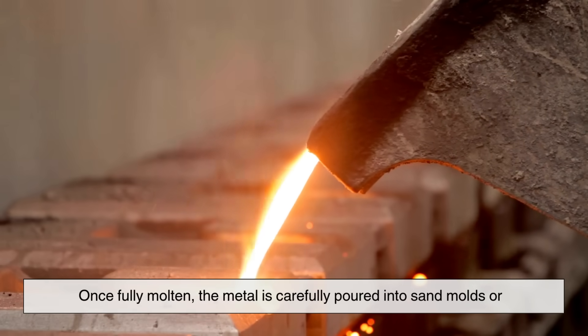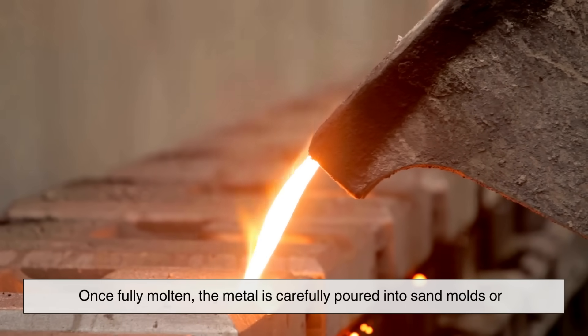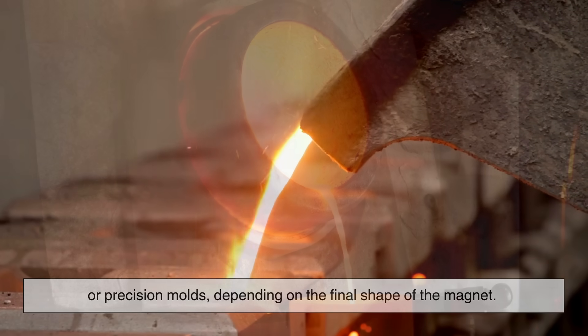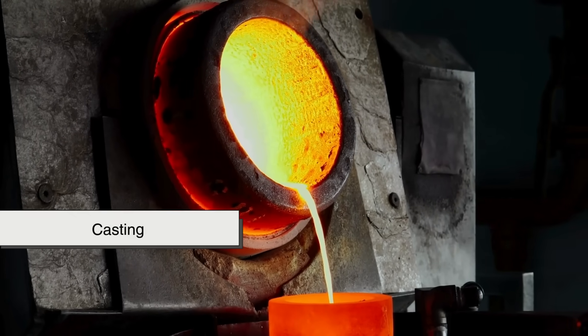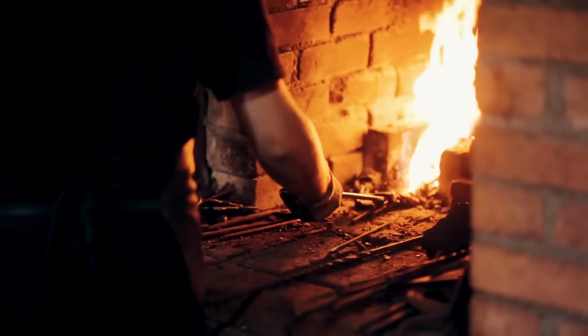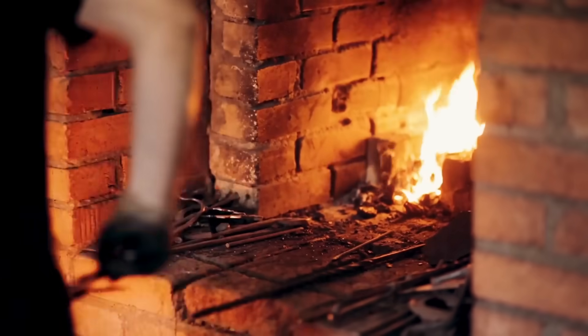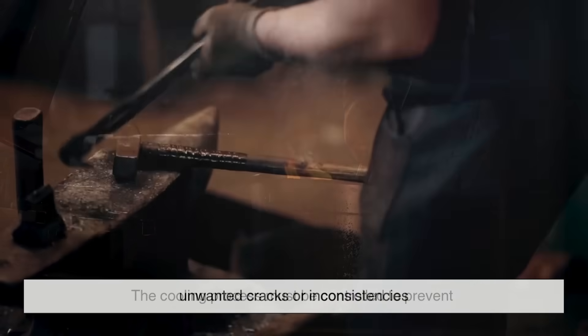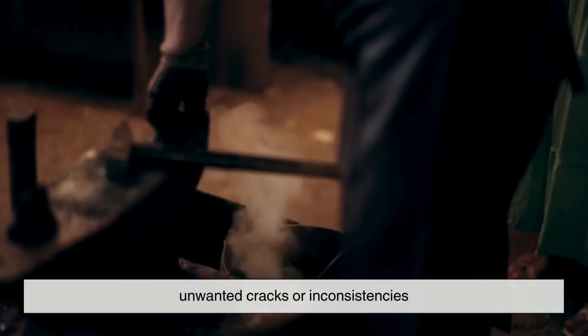Once fully molten, the metal is carefully poured into sand molds or precision molds, depending on the final shape of the magnet. This step is called casting, and it's crucial because the way the metal cools affects the magnet's structure and performance. The cooling process must be controlled to prevent unwanted cracks or inconsistencies.